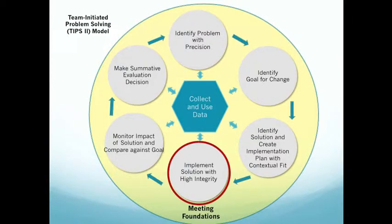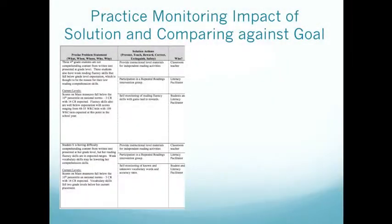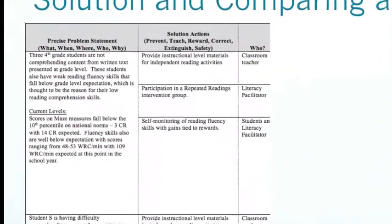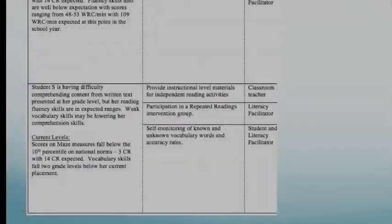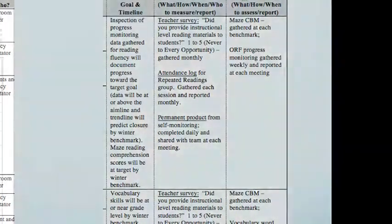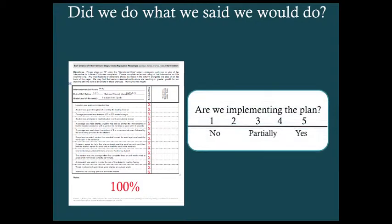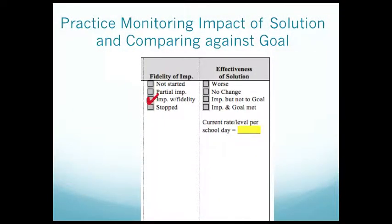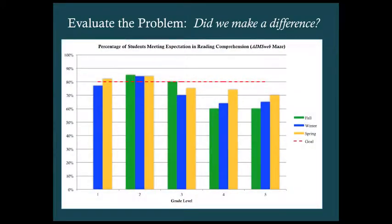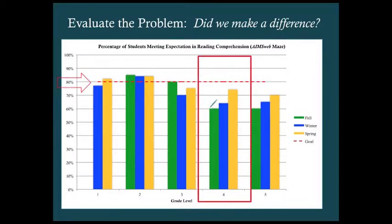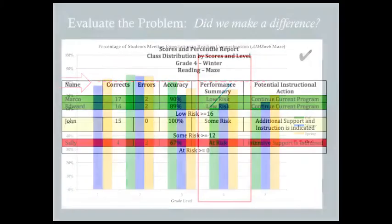After solutions have been in place, and as part of our data-based problem solving, we're going to examine the impact our solutions have had. Here's what we were putting in place for both our three fourth-grade students and for Sally, along with the fidelity and outcome measures we were administering. Here's a fidelity observation completed for the repeated readings intervention — a simple question answered as to whether we implemented the plan. Based on these data, we can say this was implemented with fidelity. Now let's look at the effectiveness of the solution: did we make a difference? Looking at SPRIN benchmark data, are we reaching 80% of students meeting expectation? We're close.